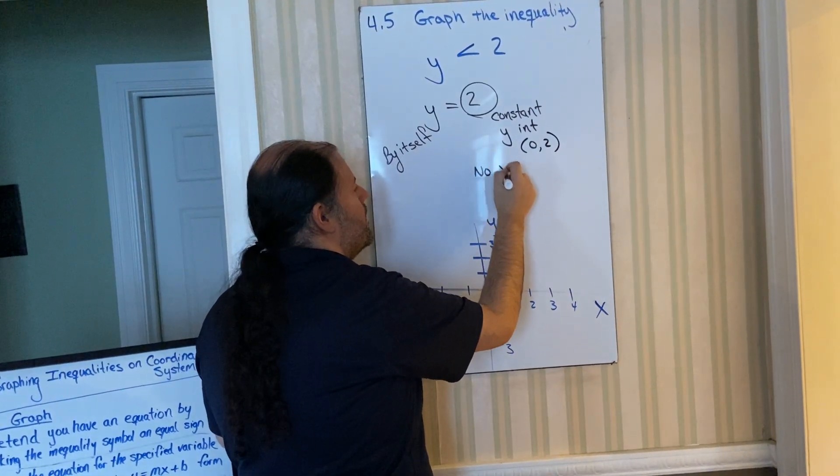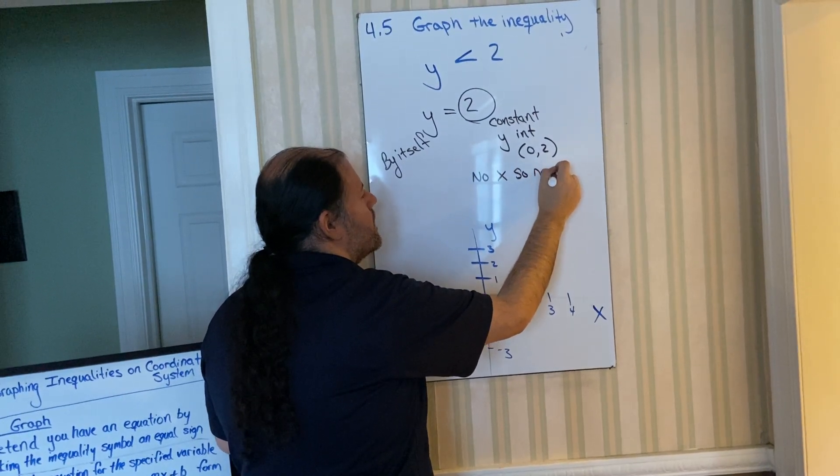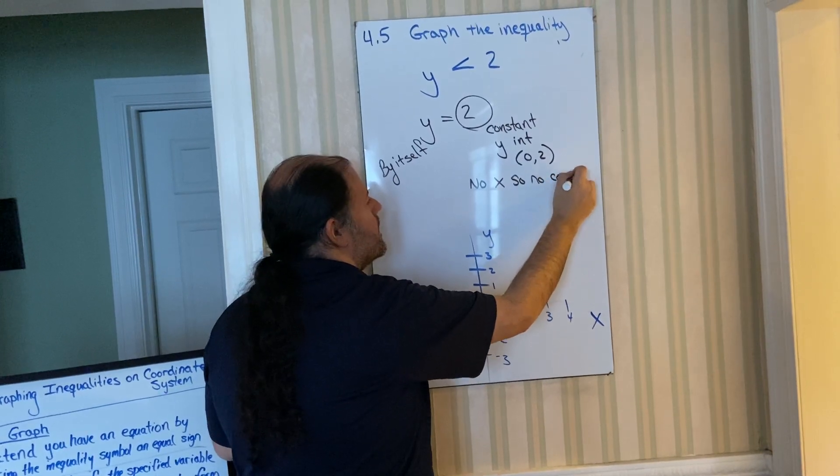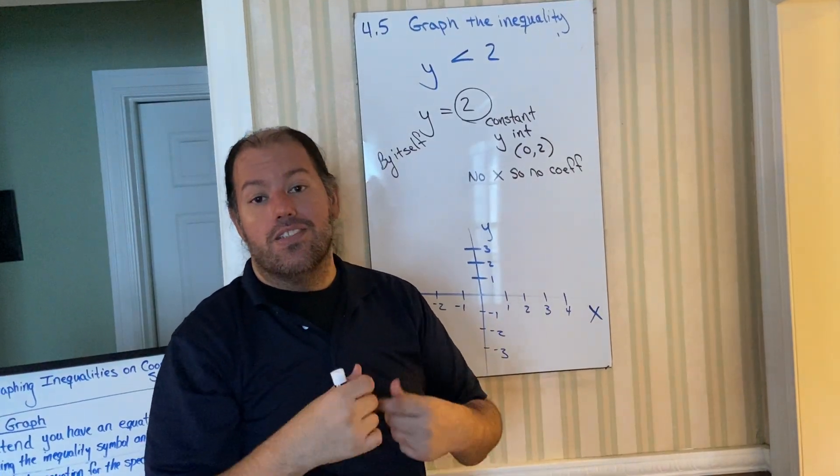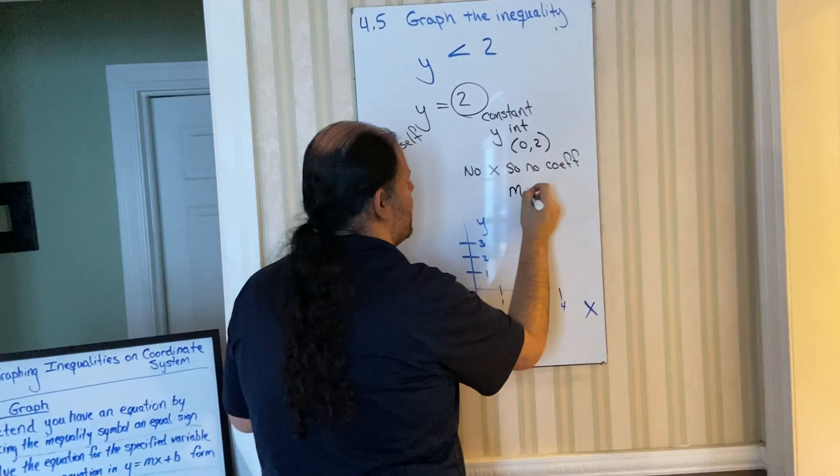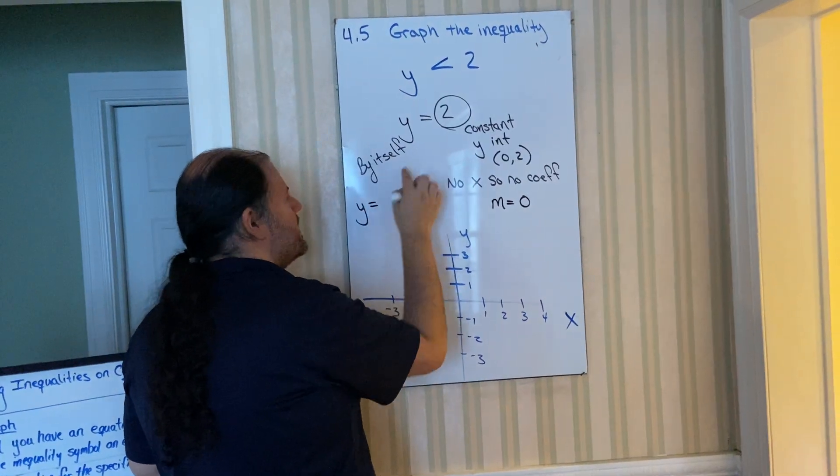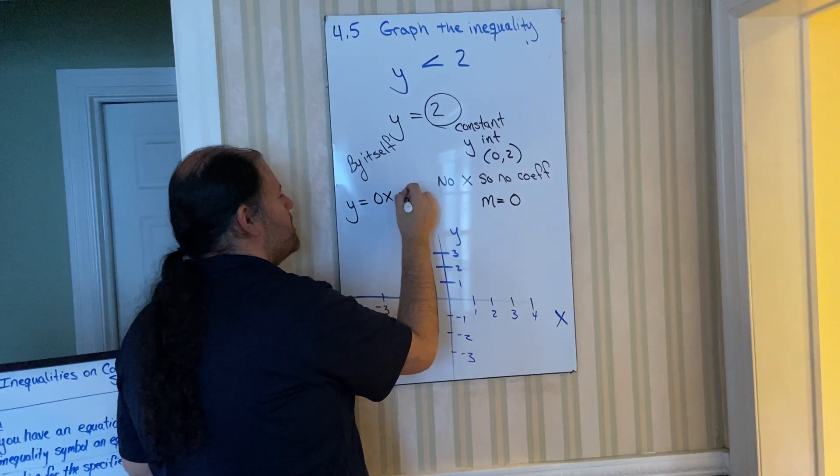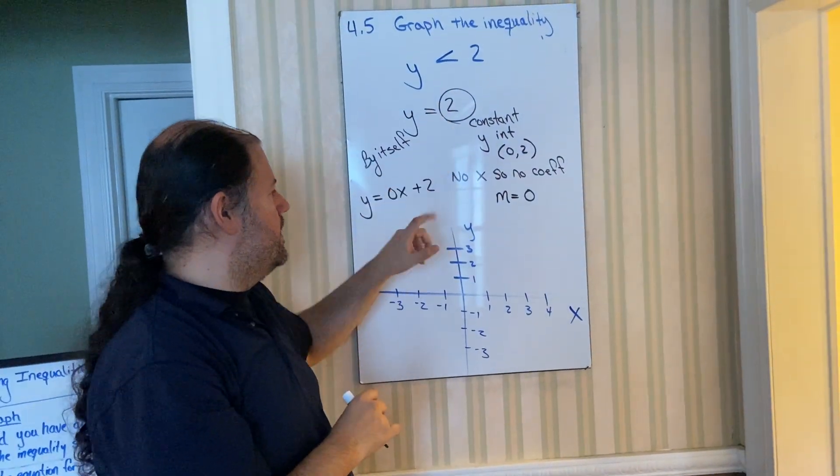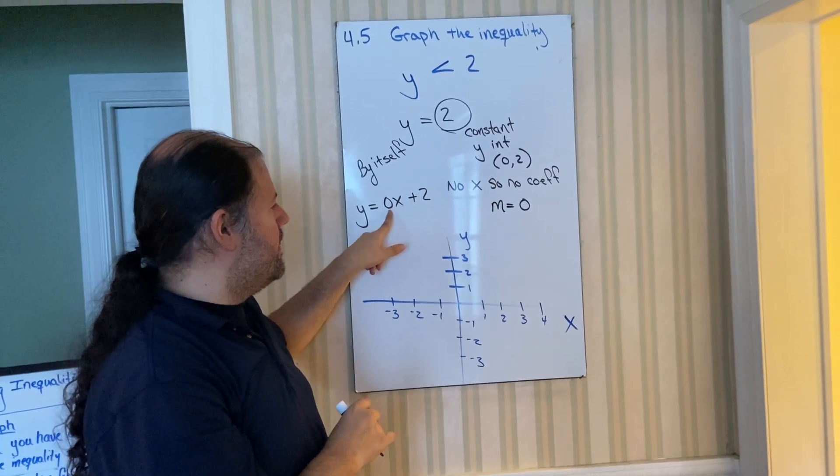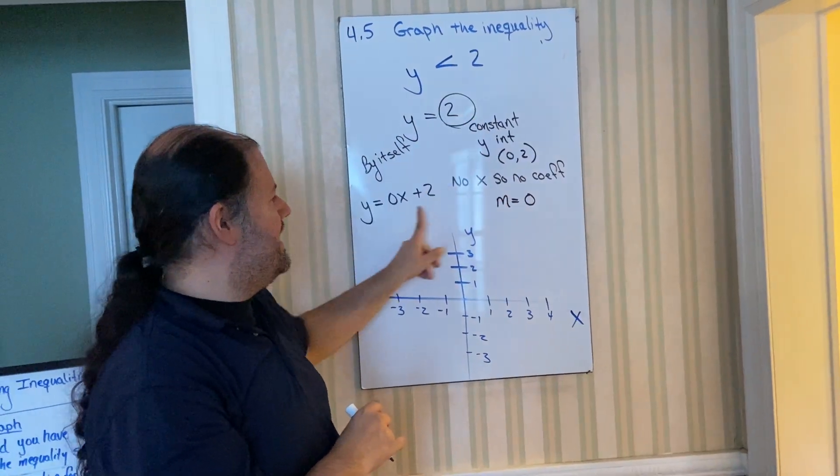Notice no x, so no coefficient. But because we have a y, we'll say our slope is zero. Why not undefined? Because we talked about this before. We said this is the same thing as saying zero x plus two. Because zero times x is zero, and zero plus two is two. So the only way for the x to disappear is that the slope, the coefficient, had to be zero. So since you didn't see it, it's technically a zero.